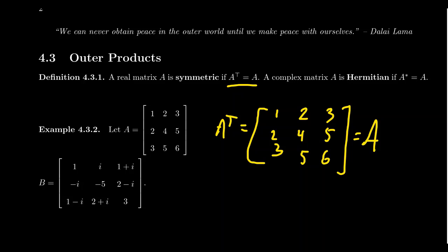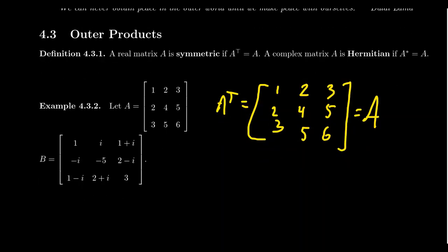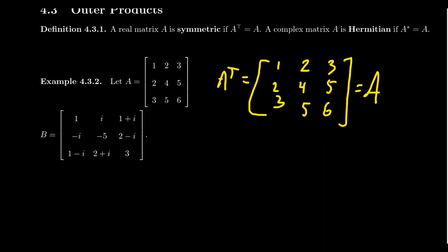For complex matrices, it turns out the symmetric matrix isn't the right one to discuss, because for complex matrices we never use just the transpose. Instead, we want to talk about matrices which are equal to their conjugate transpose. A complex matrix is referred to as Hermitian if A* is equal to A — it's just the complex analog of the symmetric condition.